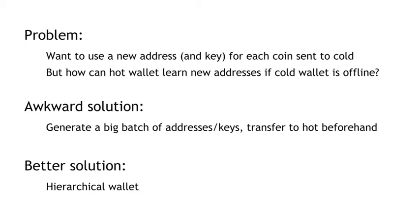There's a kind of awkward solution which would work, but we'd prefer not to use: have the cold side generate a big batch of addresses all at once, transfer those addresses over to the hot side, and then use them up one by one. The drawback is that we're periodically going to have to reconnect the cold side in order to transfer more addresses. We might worry that while spending bitcoins, the hot wallet will run out of these addresses. So generating in batches is awkward. A better, more effective solution is to use a hierarchical wallet, but that requires a little bit of cryptographic trickery.